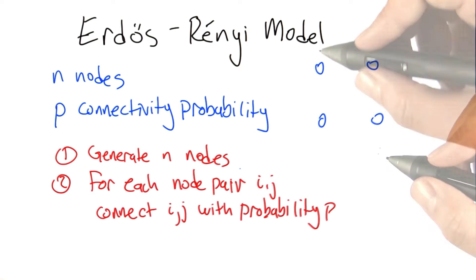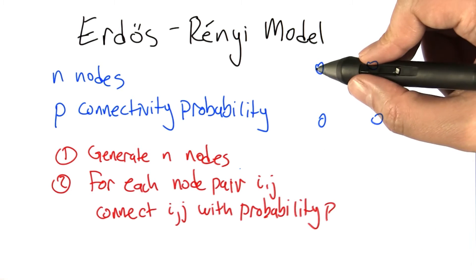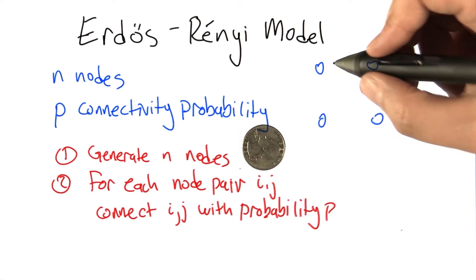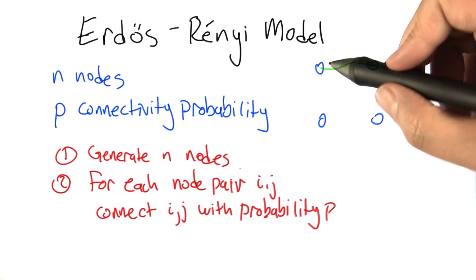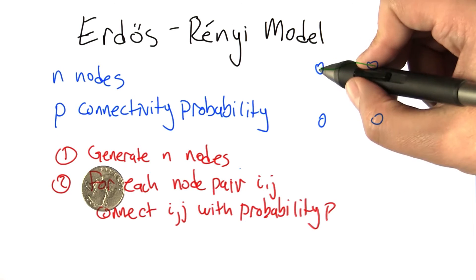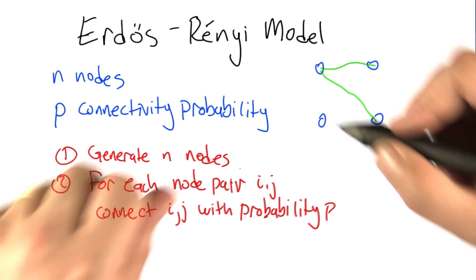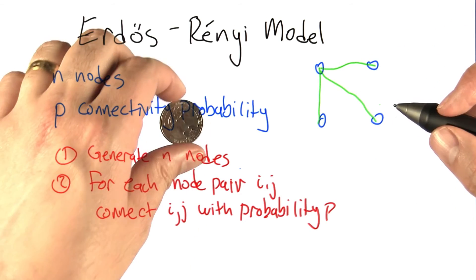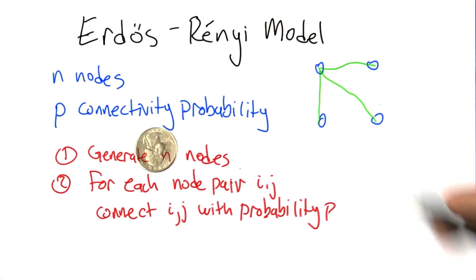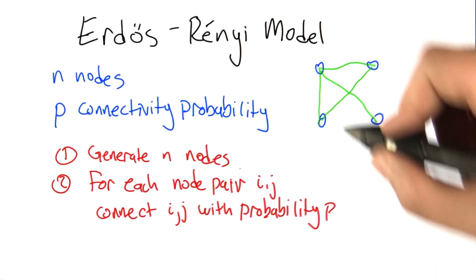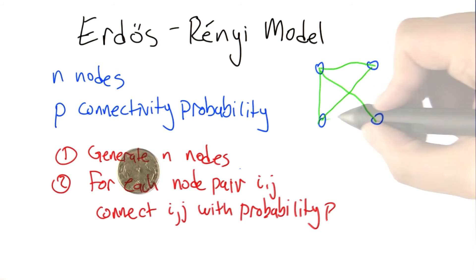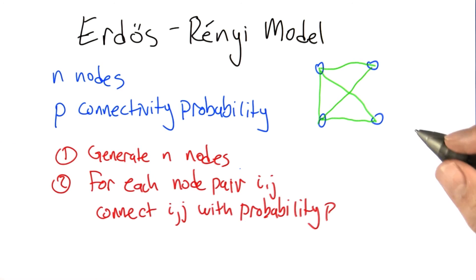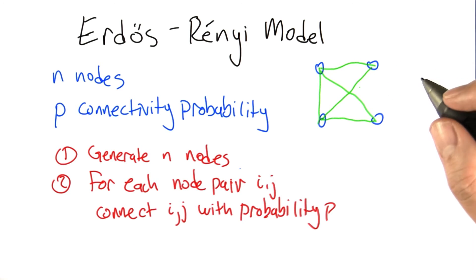We can do this for four nodes. We decide whether to connect the first two nodes — we flip a coin, it comes up heads, so we connect them. Now the second pair: heads. Third pair: heads. Next pair: tails, no edge. This pair: heads. And finally, the last pair: heads. I think I have a broken coin. But anyway, you get the idea — you end up with a graph with some edges included and some not.